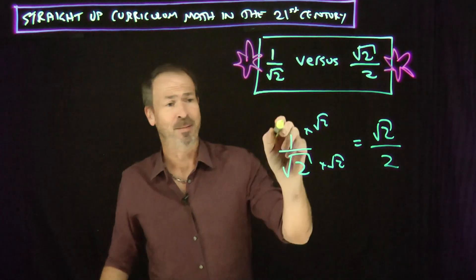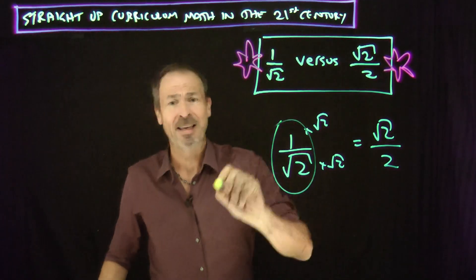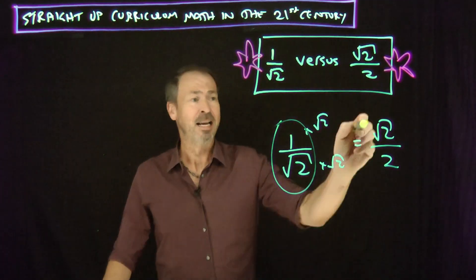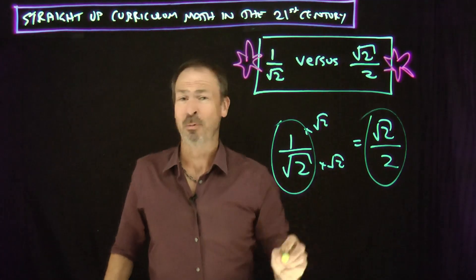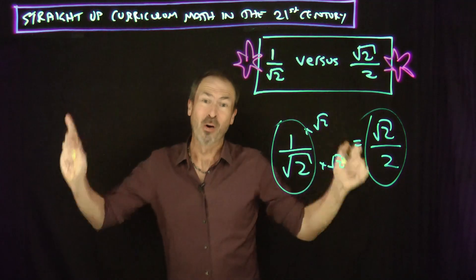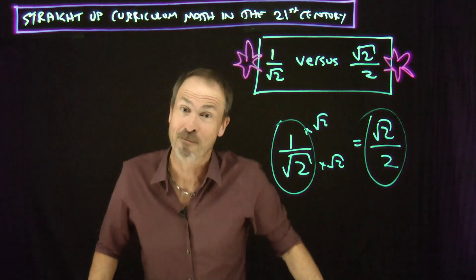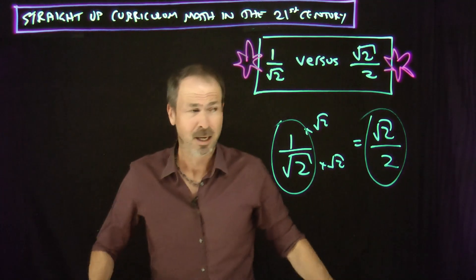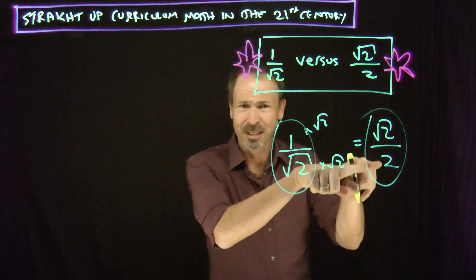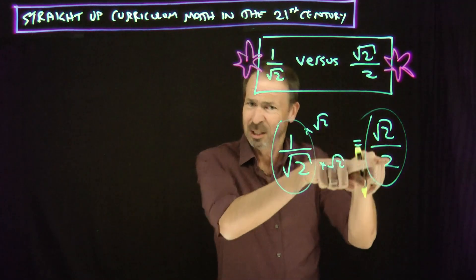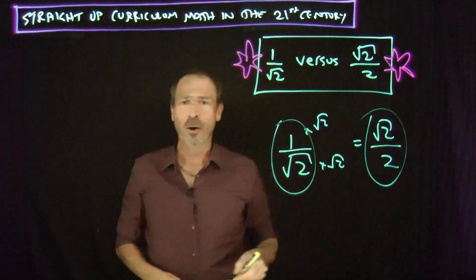Now, of course, they're the same number. Mathematically, that number is fine. Mathematically, that number is fine. They're both equally good mathematically. So why do people insist on putting the square roots at the top and not having them on the bottom?